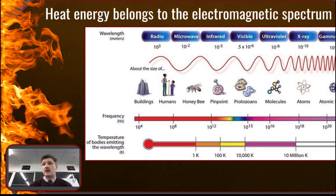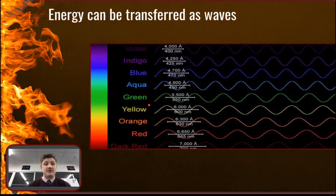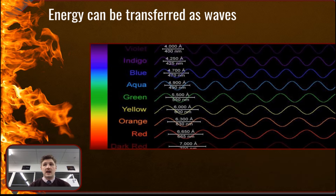Infrared waves sit just before the visible light spectrum on the electromagnetic spectrum, which covers all energy wavelengths. Light and other types of electromagnetic radiation from the sun — and even distant stars — travel through space in a vacuum with very few molecules, particles, or atoms. Each particular type of electromagnetic radiation, including each different colour of light, has a unique and fixed wavelength.